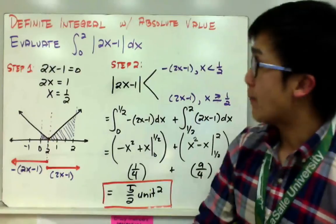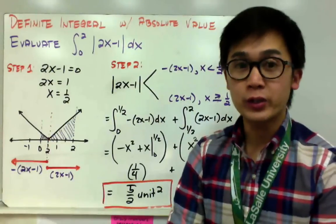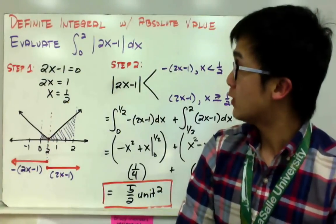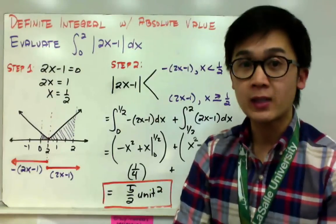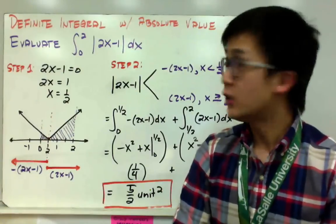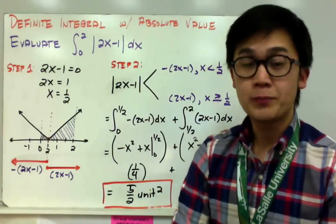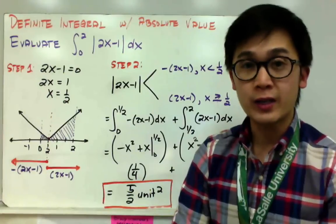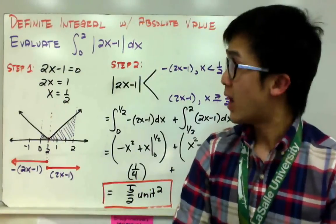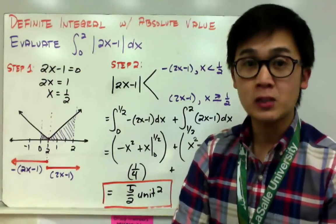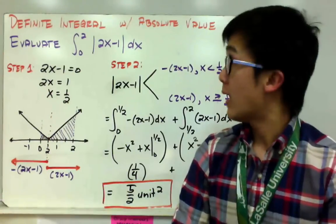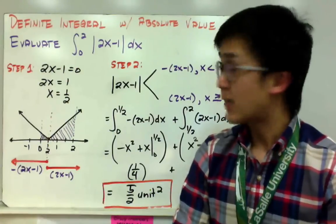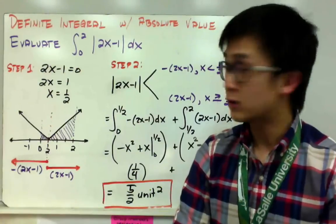In this first example, we need to find the area under the curve of our function — absolute value of 2x minus 1 dx — from the interval 0 through 2. There are two steps: first is finding the x-intercept of our absolute value function so we can graph it, and the second step is performing the definite integral.